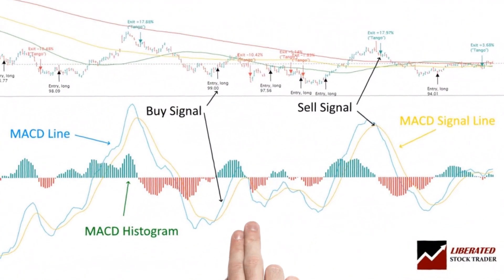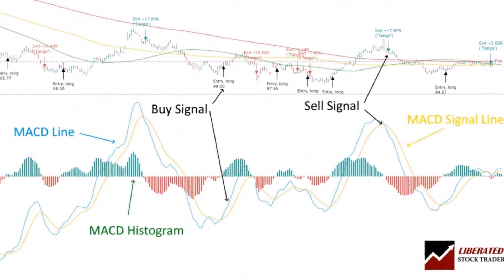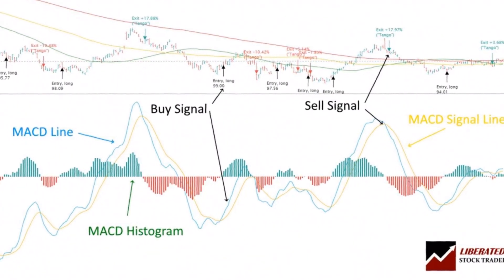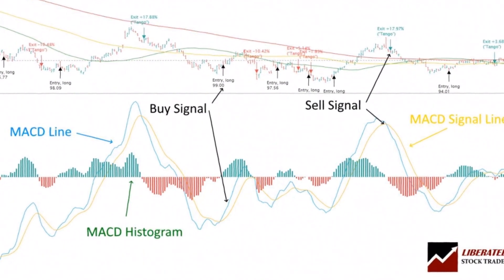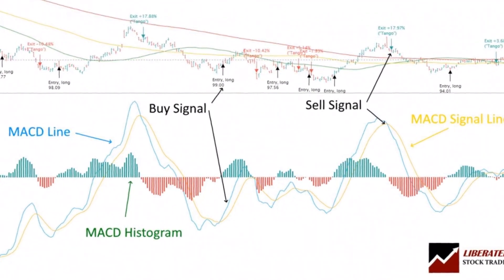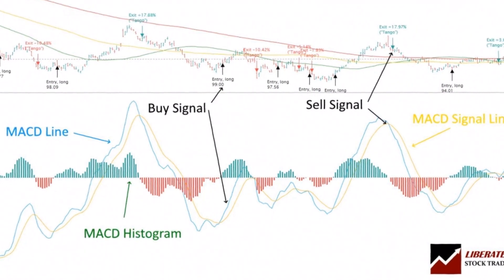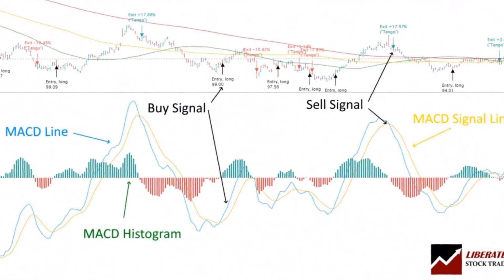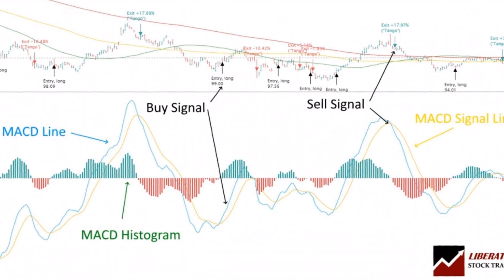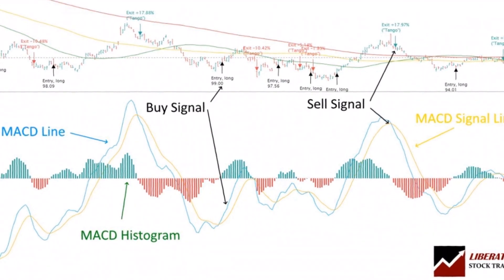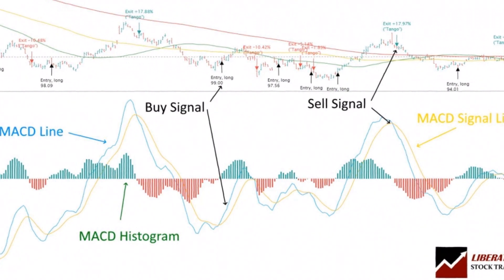In the lower pane of this chart, you can see the MACD histogram, which subtracts the signal line from the MACD line. The histogram is an effective tool for identifying momentum and divergences in price movements. When the MACD line rises faster than its signal line, the histogram bars tend to grow in height. This suggests bullish momentum is increasing and could be used as a buy signal.